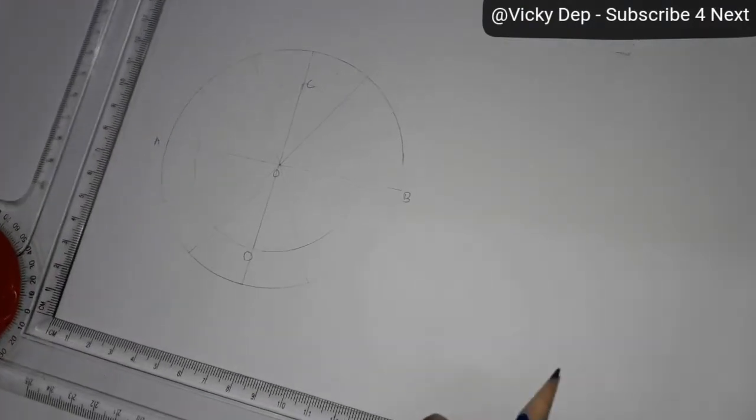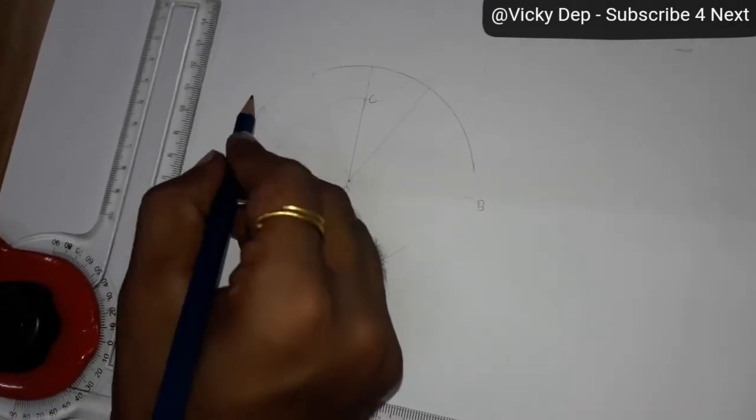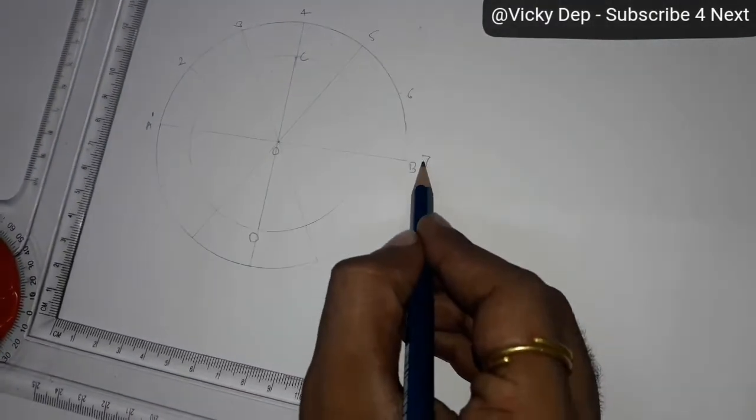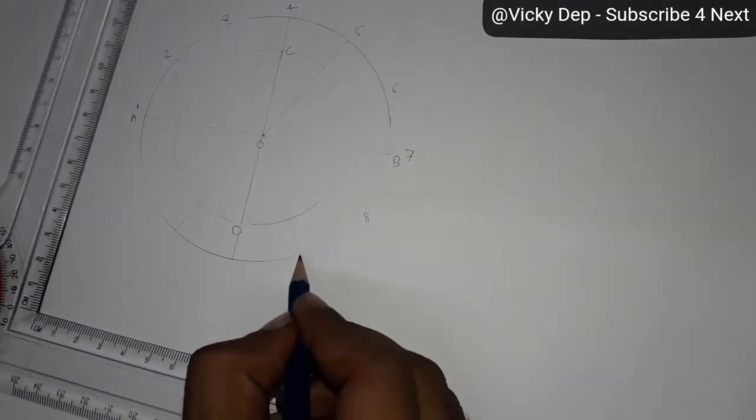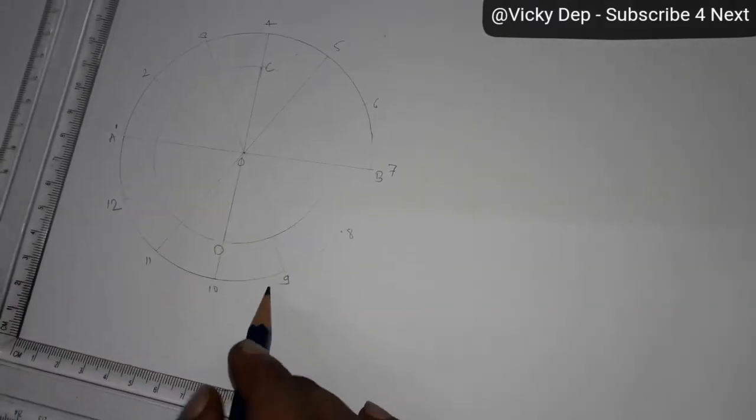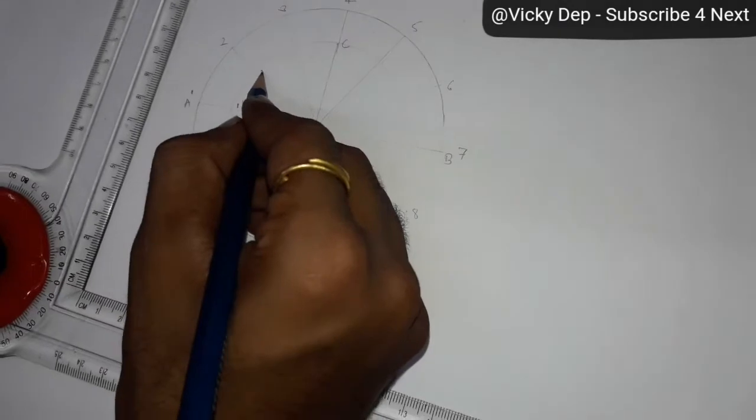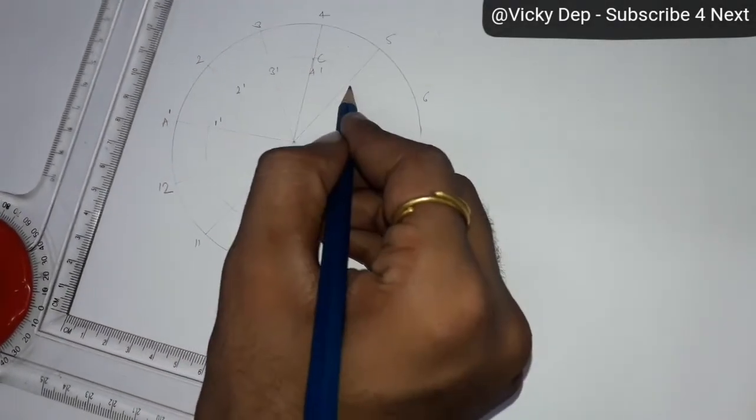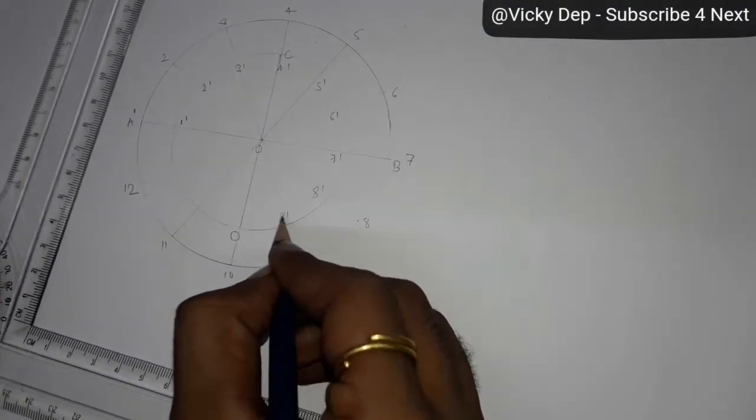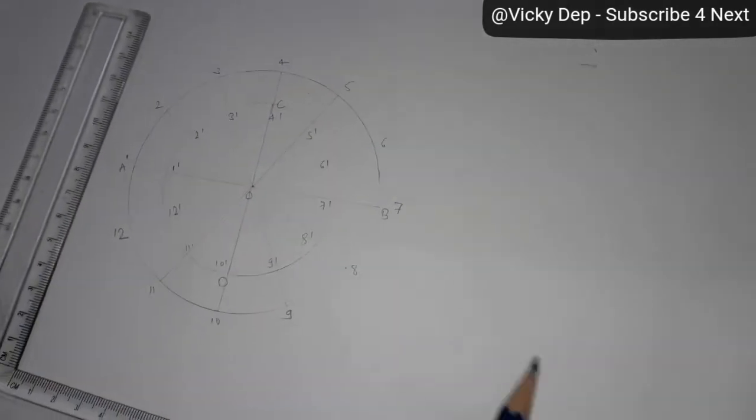Give namings. Namings are important. We will start from a point this will be the point one, two, three, four, five, six point B, seven, eight, nine, ten, eleven, twelve. Similarly this inner circle also you have to give the namings same. This will be the one dash, two dash, three dash, four dash, five dash, six dash, seven dash, eight dash, nine dash, ten dash, eleven dash and twelve dash. Now we have divided both the circles in twelve parts.